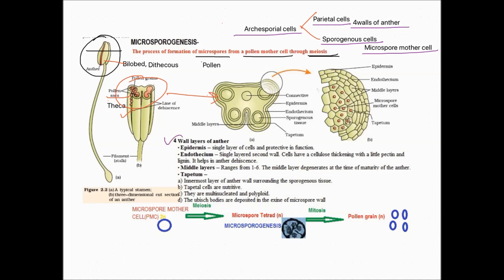The anther consists of four walls. The outermost wall is the epidermis. The second is the endothecium. The third is the middle layers. The fourth and innermost layer is the tapetum. The epidermis is a single layer of cells and is protective in function.